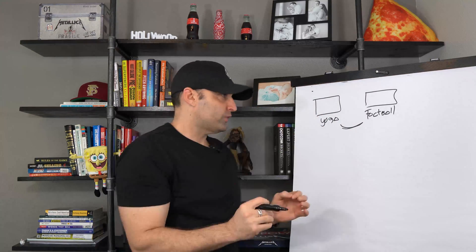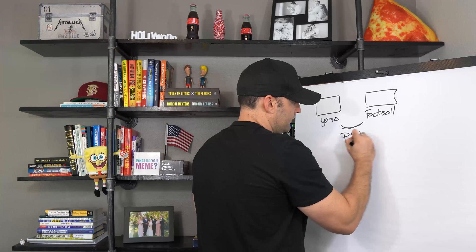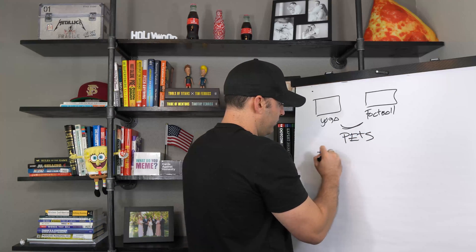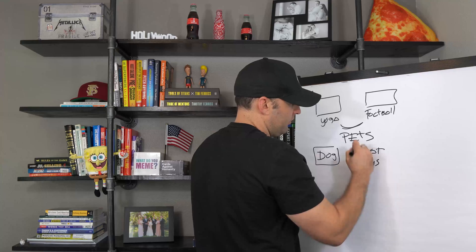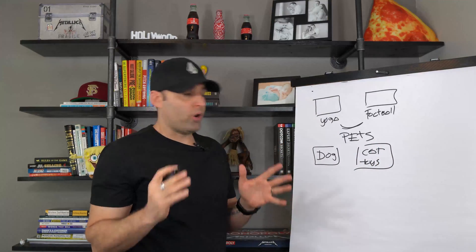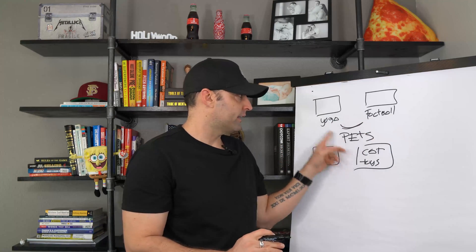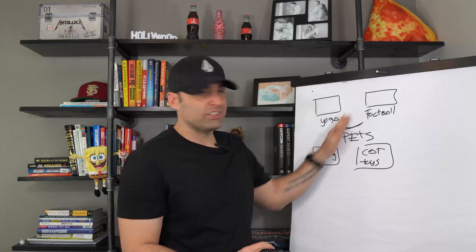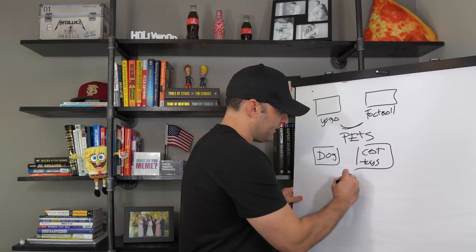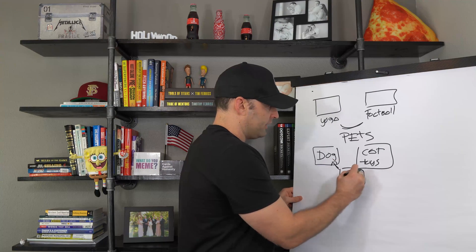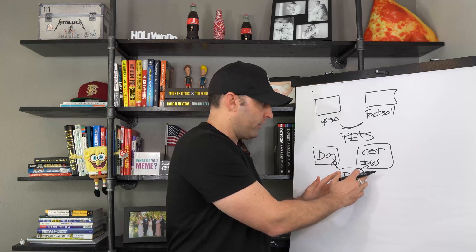If you have one store with completely different audiences, consider this: if you have a store that sells dog toys and cat toys, those are two similar audiences. So you should only be using one pixel. Dog toys and cat toys are not different niches — they both fall under the pets niche. That's the main niche, and then you have dogs, cats, and other pets. So you should definitely use only one pixel here.